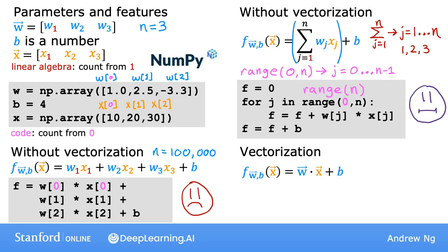This is the math expression of the function f, which is the dot product of w and x plus b. And now you can implement this with a single line of code by computing f equals np.dot.